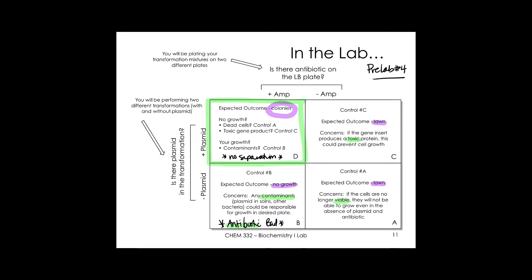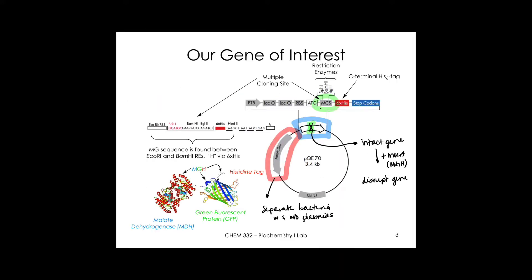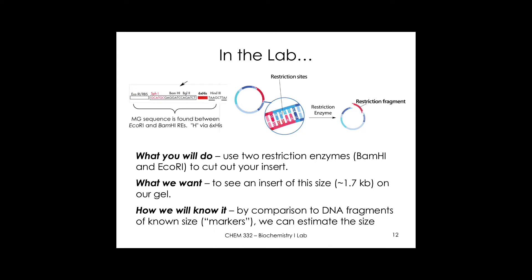Moving to the second experiment: the double digest. We'll use two restriction enzymes — EcoRI and BamHI — as molecular scissors to snip out our insert. Looking at our plasmid map, EcoRI and BamHI restriction sites flank the multi-cloning site. Using both enzymes in this region should drop out our insert, which is 1,722 nucleotides in size.